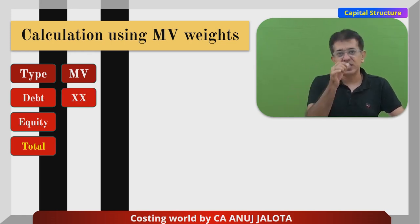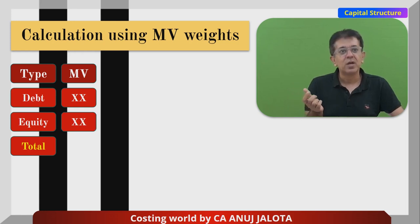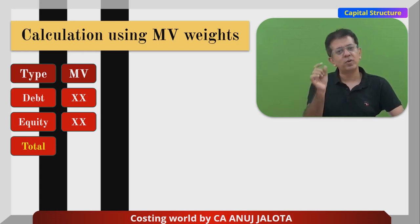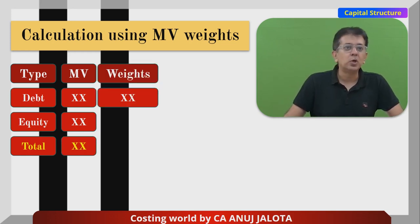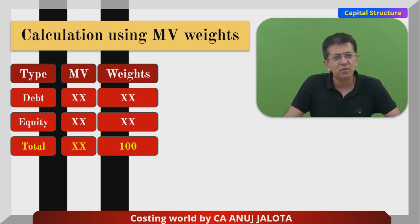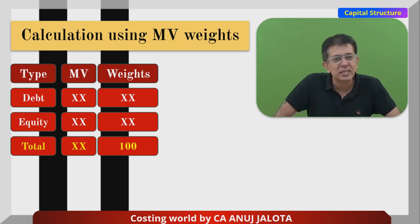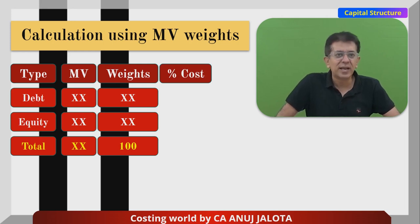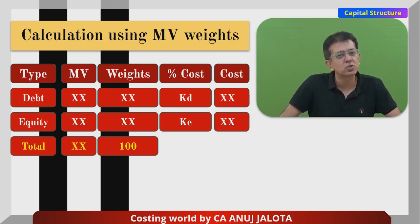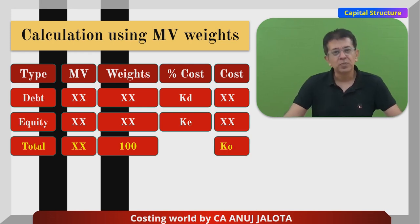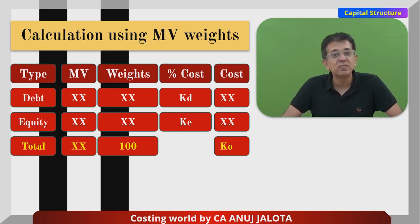The next column will be the market value — so whatever is the total debt, what is its market value; whatever is the total equity, what is its market value. The equity's market value is the number of equity shares multiplied by market value per share. You total it up, convert this total into weights out of 100, then multiply by the percentage cost — kd for debt and ke for equity — to arrive at the final weighted cost. The total of that is ko.